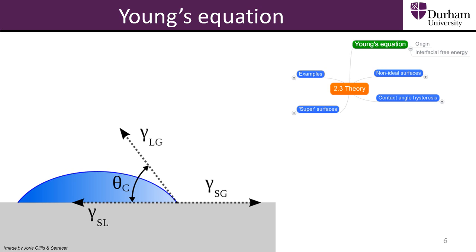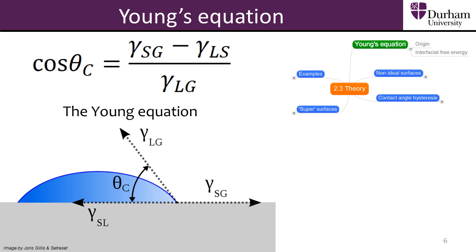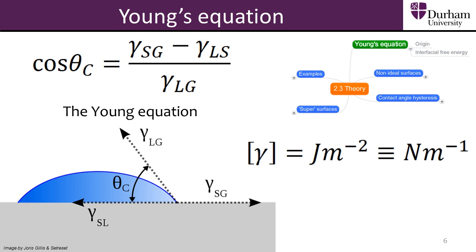To calculate the contact angle of water on an ideal surface we use Young's equation. The equation uses the interfacial free energy values of the solid-liquid, solid-gas, and liquid-gas interfaces to calculate contact angle. Interfacial free energy, also known as surface or interfacial tension, is a measure of the energy required to create a unit area of the interface, measured in joules per metre squared. The interfacial tension can equivalently be considered as a force acting on a line of unit length of the interface, measured in newtons per metre.